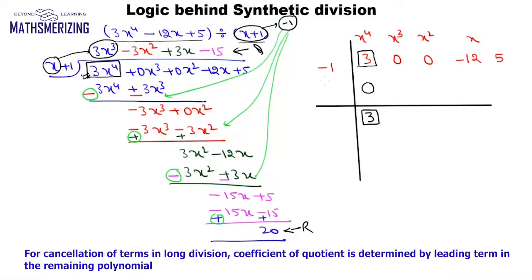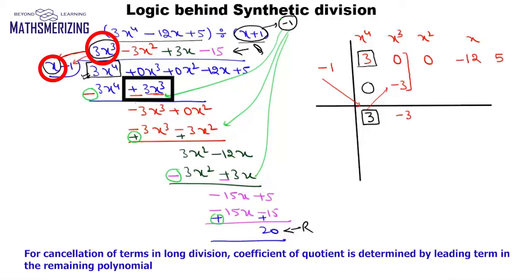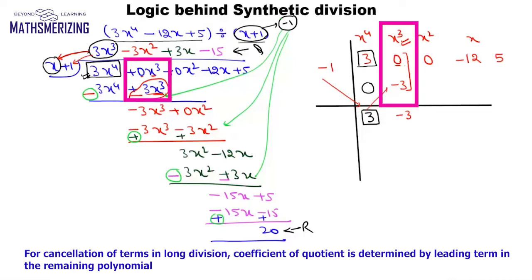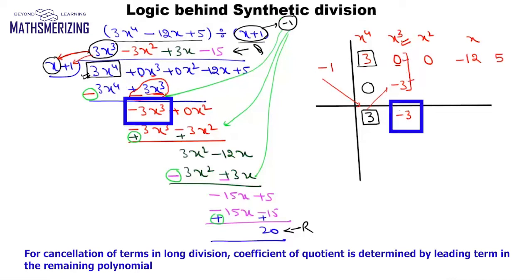We multiply minus 1 with 3 and put the result there, which is minus 3, and then 0 plus minus 3 is minus 3. What has happened is when we multiplied 3x³ by x we got another term, 3x³, and after changing the sign it becomes minus 3x³. Previously the coefficient of x³ was 0; now we have another term with coefficient minus 3. So 0 plus minus 3 is minus 3.